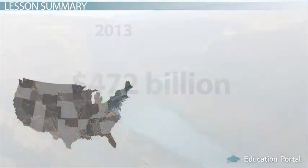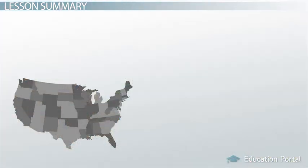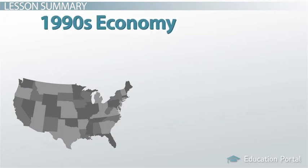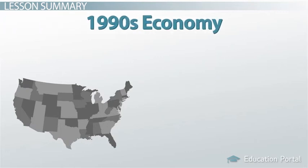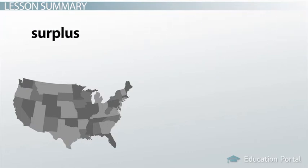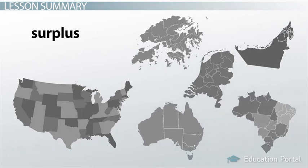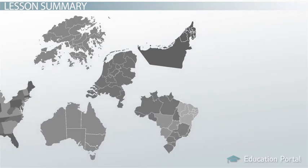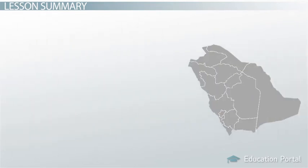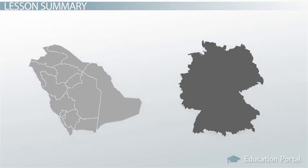Although the US ran an overall deficit, and it generally accelerated through the 1990s, it still runs trade surpluses with certain countries, like Brazil and Australia. On the other end of the spectrum are Saudi Arabia and Germany, which have generated over $200 billion trade surpluses annually since 2011.